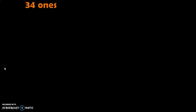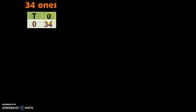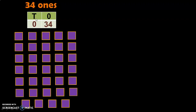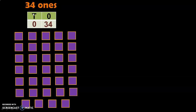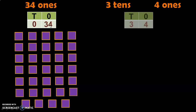Consider 34 Ones. In the place value chart, you will have 34 in the Ones place and 0 in the Tens place. First, look at the Ones place. You have 34 Ones, and 34 Ones can be written as 3 Tens plus 4 Ones. So you will have 4 in the Ones place and the number 3 will be moved to the Tens place, giving you 3 Tens and 4 Ones, which is the value 34 again.